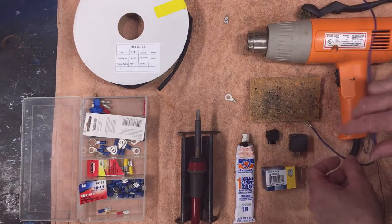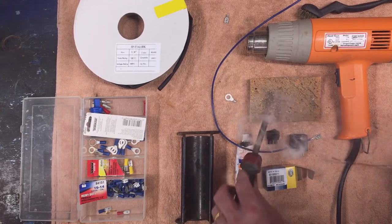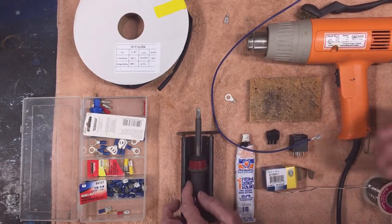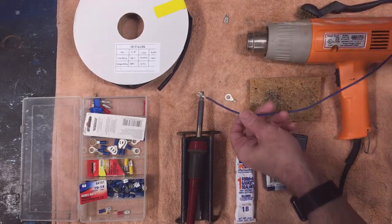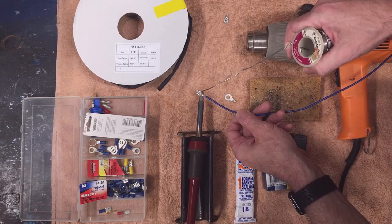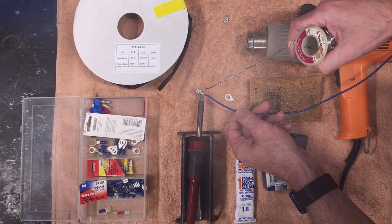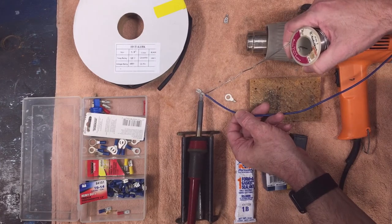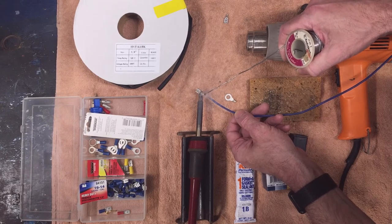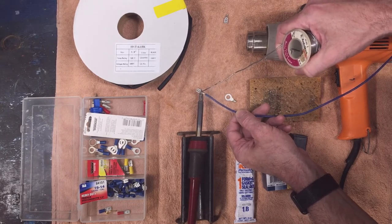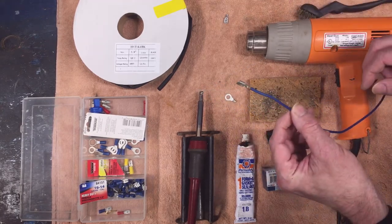Then I'm going to tin my soldering iron to make sure it's hot and tinned, and I'm going to heat the connector. Make sure I got good heat transfer. Heat the connector and then add my solder to the wire. See how it flowed into the connector right there? See how it bubbled and came in there? So that's a good solder joint.